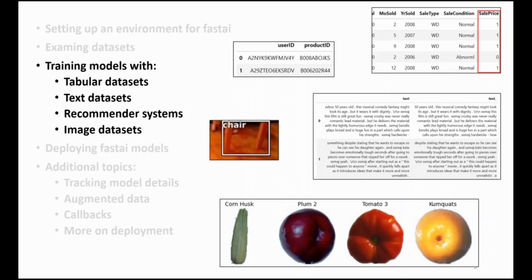The main part of the book, from chapters three to chapter six, takes you through recipes to train deep learning models for the four application types supported by Fast AI: Tabular datasets, text datasets, recommender systems, and image datasets.